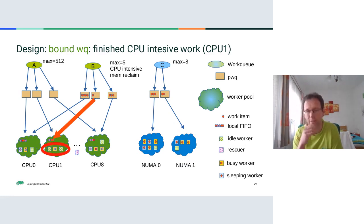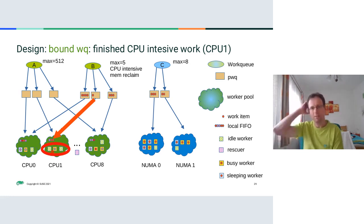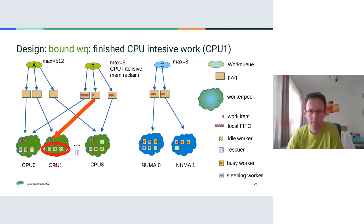When a worker finishes a work item — in this case, a CPU-intensive work item — and there is still another worker processing a normal (fast) work item, the worker that finished simply goes idle. The reason is that this makes behavior more predictable, and otherwise there might be a growing number of workers processing a lot of work items in parallel.